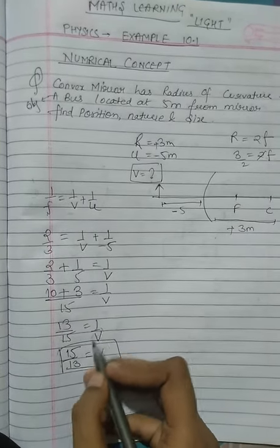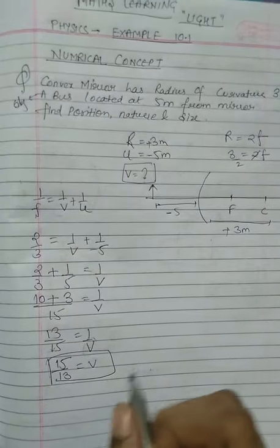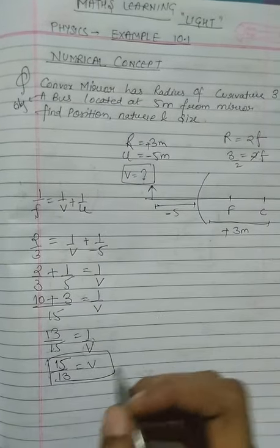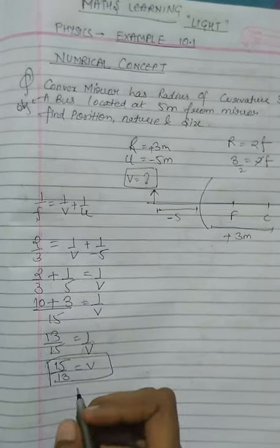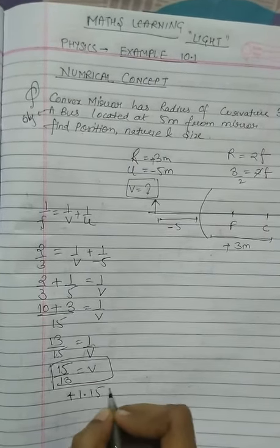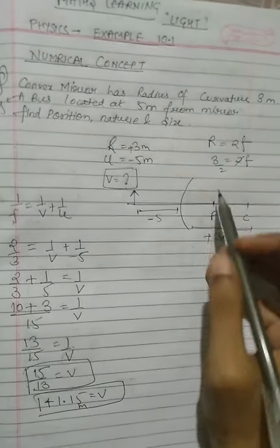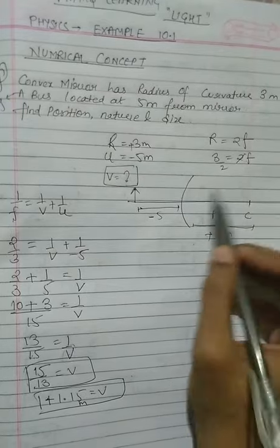If we start with v, then the output is v. Now the image position is at plus 1.15 meters. Plus means the image is on the right side.